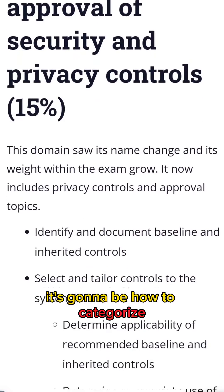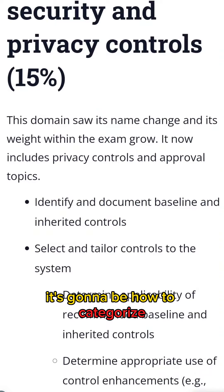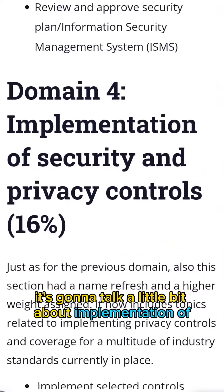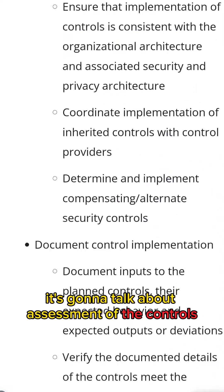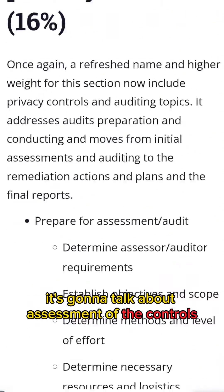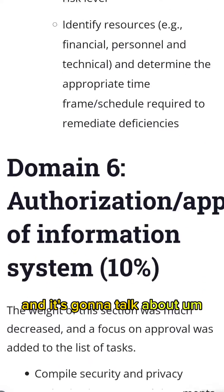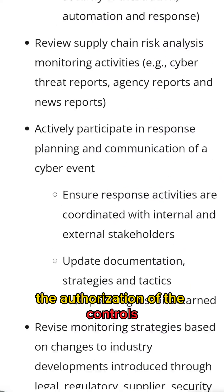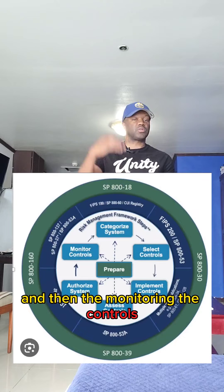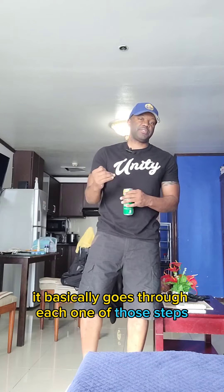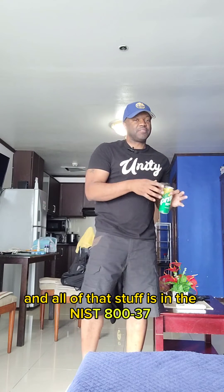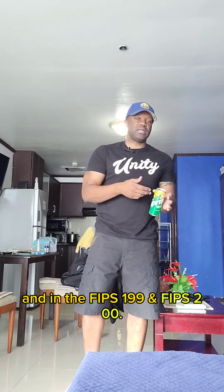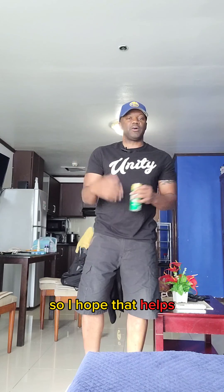It's going to cover how to categorize and select the controls. It's going to talk a little bit about implementation of the controls, assessment of the controls, authorization of the controls, and then the monitoring of the controls — it basically goes through each one of those steps. All of that stuff is in the NIST 800-37, FIPS 200, and FIPS 199. So, I hope that helps.